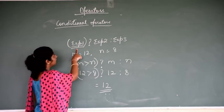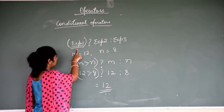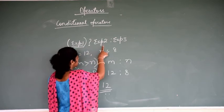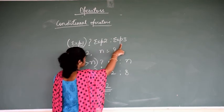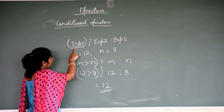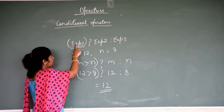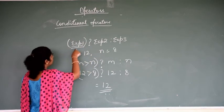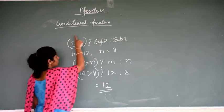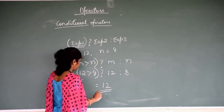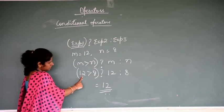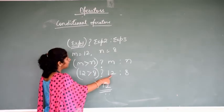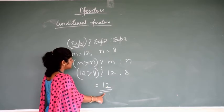The syntax of the conditional operator is expression1 ? expression2 : expression3. If the condition is true it evaluates expression2; if false it evaluates expression3. Since 12 is greater than 8, the condition is true and it returns the value 12.